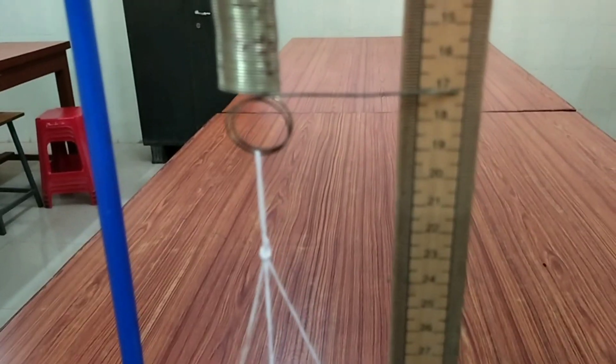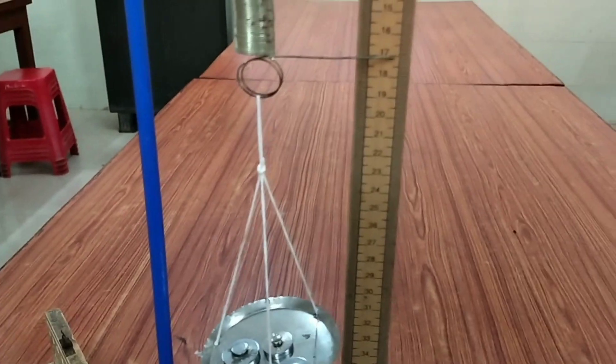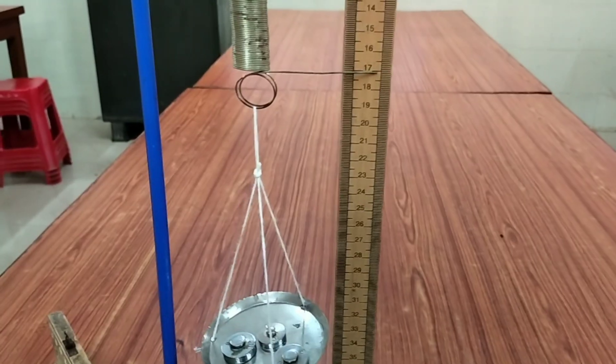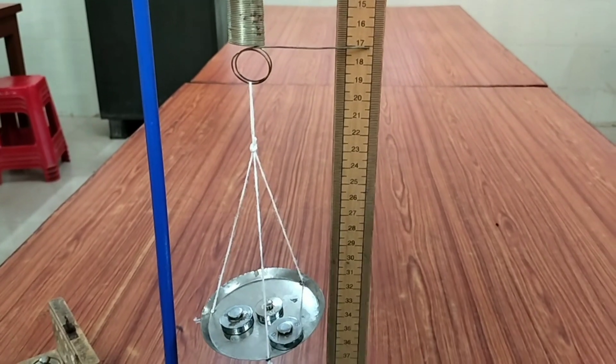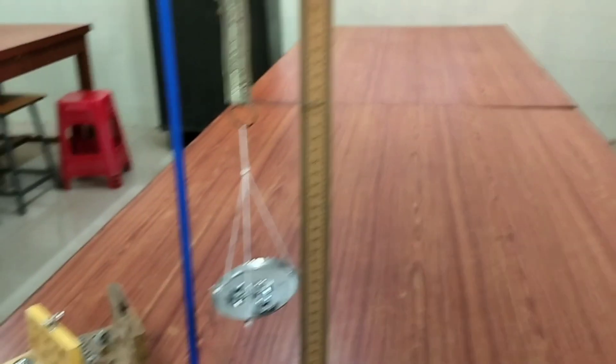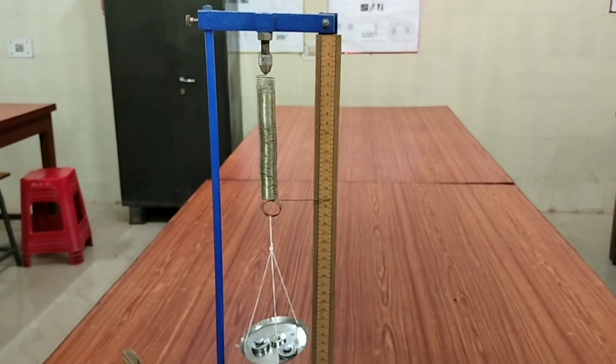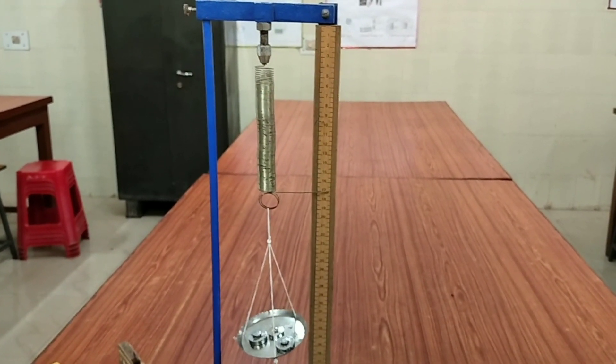After the observation, you plot the graph that is load versus extension graph. And if you take the slope from the slope of the straight line graph, you can find out the value of the spring constant. Thank you.